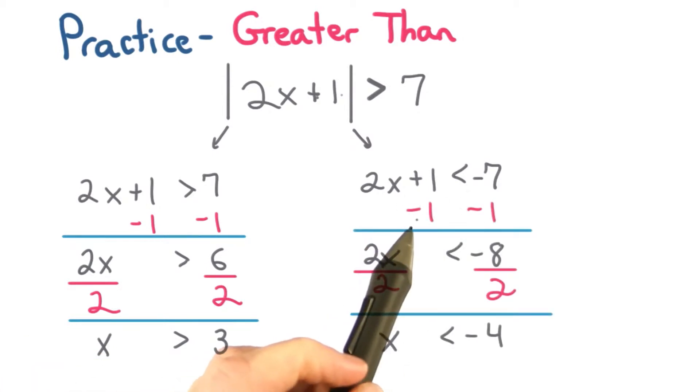For the other inequality, I subtract 1 from both sides, then divide by 2, so x is less than negative 4.